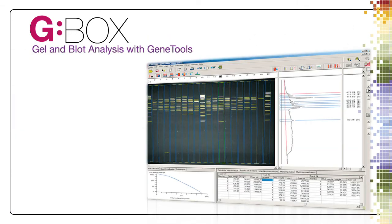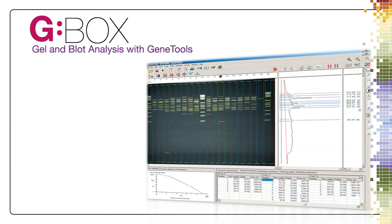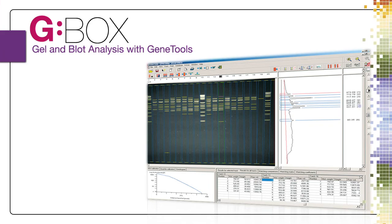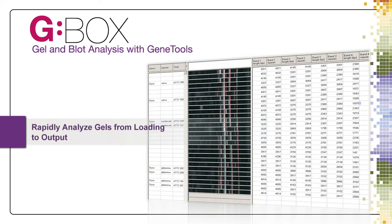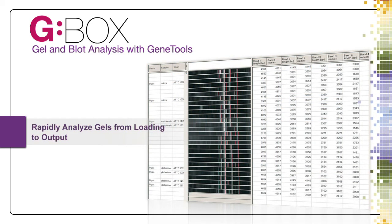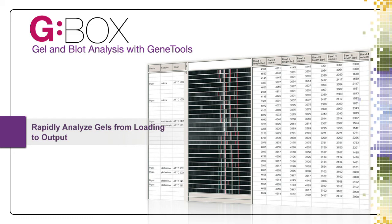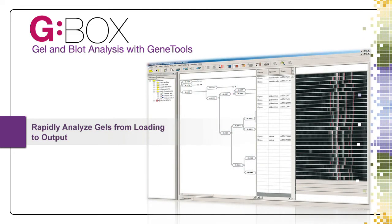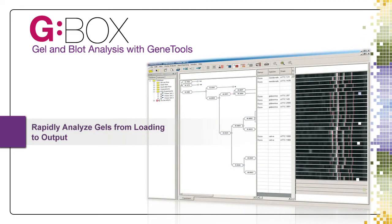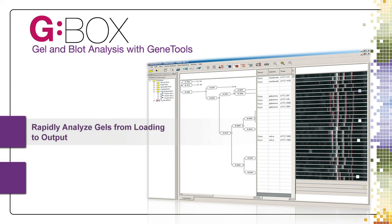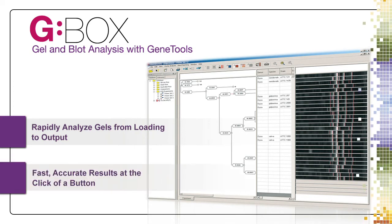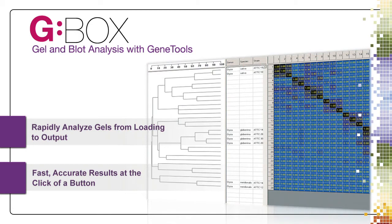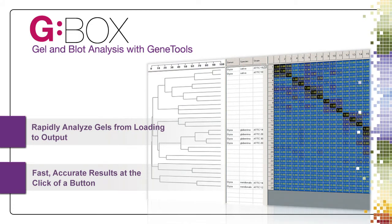Every G-Box comes with our acclaimed GeneTools analysis software. This highly automated software can rapidly analyze a gel from loading to output in a matter of seconds. Simplicity is the key feature of GeneTools, allowing even the most inexperienced user to obtain fast, accurate results at the click of a button and with minimal training.